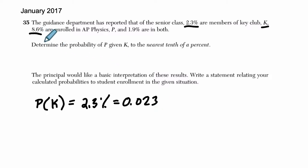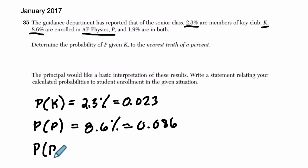And 8.6% are enrolled in AP Physics P. So the probability of being in physics is going to be 1.9%, which is 0.019. Nope, that's wrong. I heard that wrong. Sorry. The probability that they are in physics is 8.6%. Let's fix that. 8.6%, I read ahead there, equals 0.086. And then the probability that they are in both, so the probability in physics and key club equals 1.9%, which is 0.019. So we have all this information. I'm just writing it out.